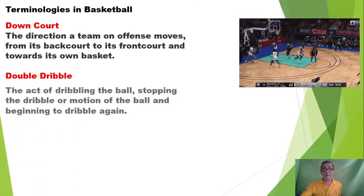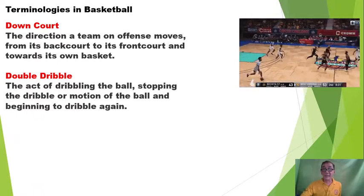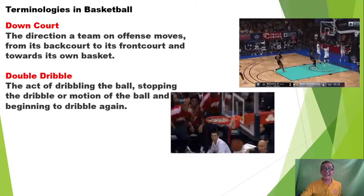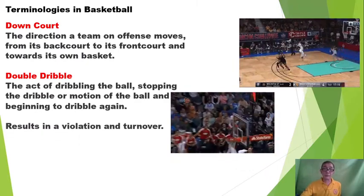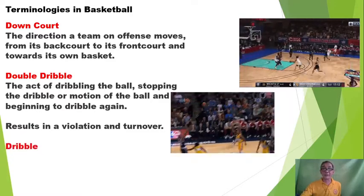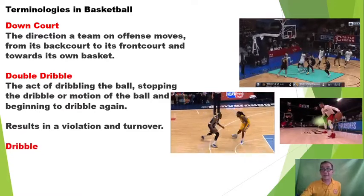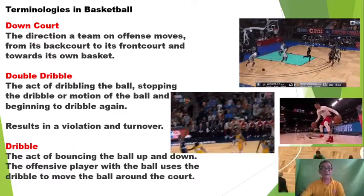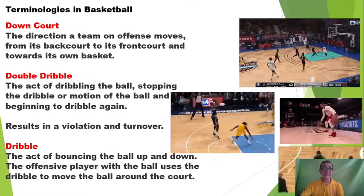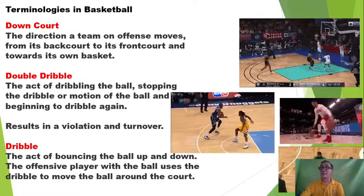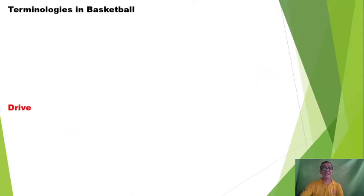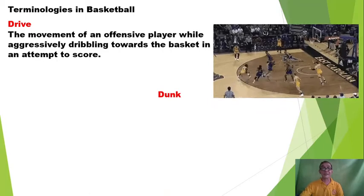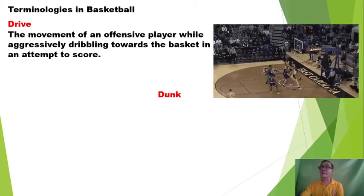How about the double dribble? That is the act of dribbling the ball, stopping the dribble or motion of the ball, and beginning to dribble again — the result is a violation and turnover. About dribble, we have many types of dribbling — that is the act of bouncing the ball up and down, and the offensive player with the ball uses the dribble to move the ball around the court. And the drive — that is the movement of an offensive player while aggressively dribbling towards the basket in an attempt to score.